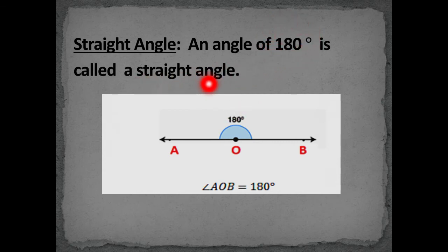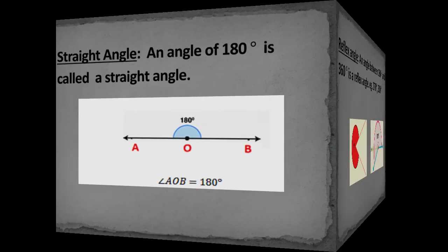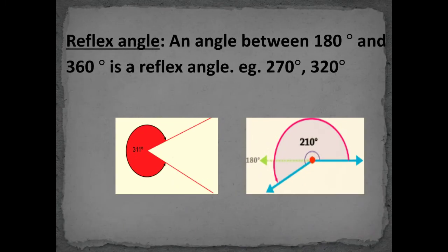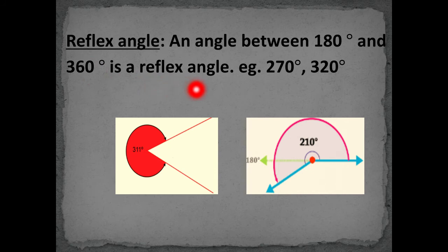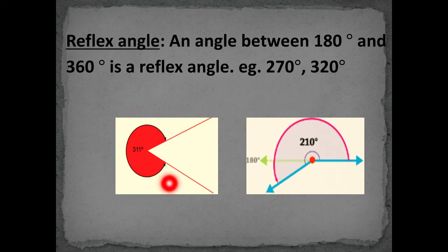Next we have the straight angle. An angle of 180 degrees is called a straight angle, and it is represented by a straight line. A reflex angle is an angle whose measure lies between 180 degrees and 360 degrees. For example, 270 degrees and 220 degrees are reflex angles. Here we have reflex angles of 311 degrees and 210 degrees.